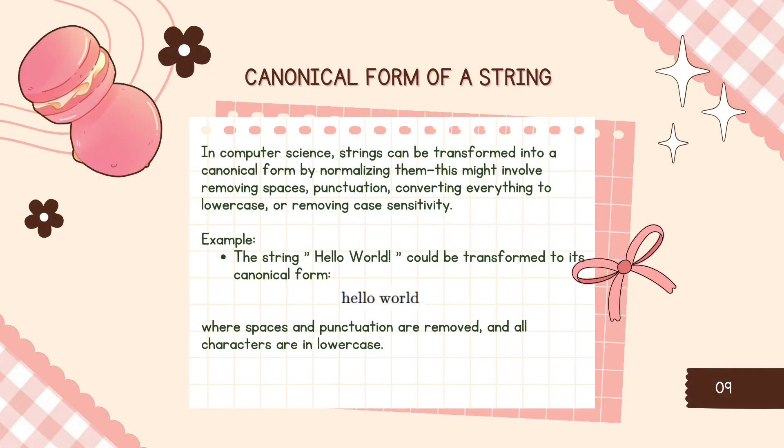Lastly, canonical form of a string. In computer science, strings can be transformed into a canonical form by normalizing them. This might involve removing spaces, punctuation, converting everything to lowercase, or removing case sensitivity. Example: the string "Hello World" could be transformed to its canonical form, h-e-l-l-o-w-o-r-l-d, which is helloworld, where spaces and punctuation are removed and all characters are in lowercase.